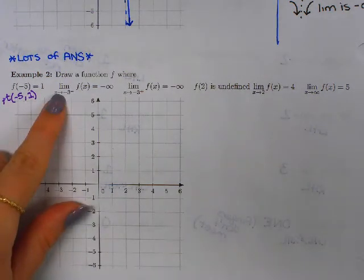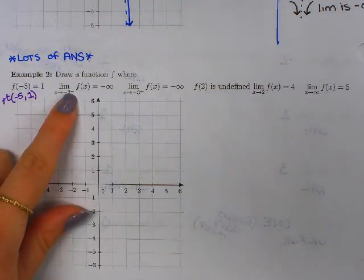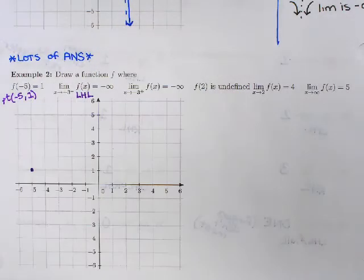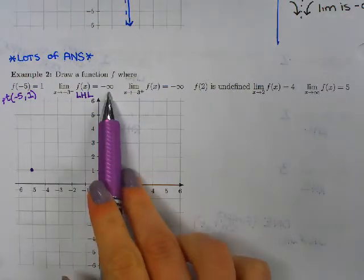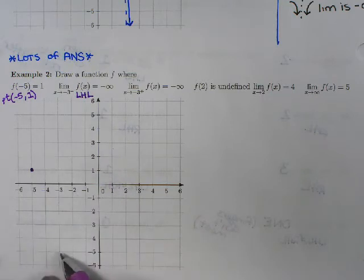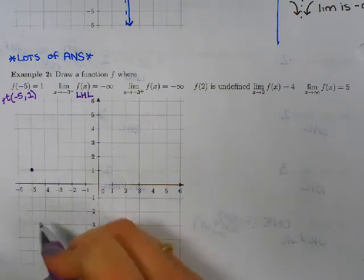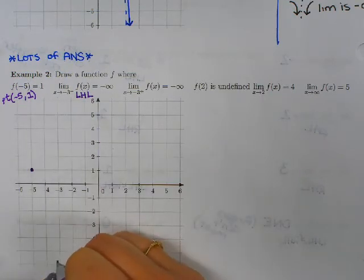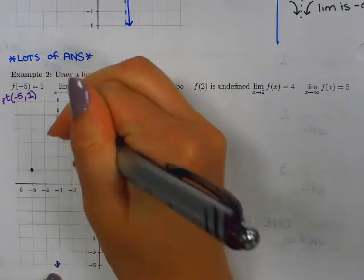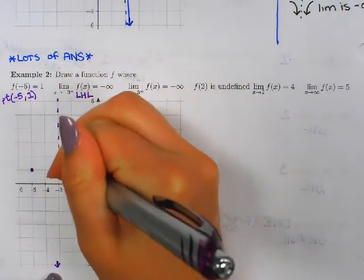My next piece says the limit as x approaches negative 3 from the negative side. So I have a left-hand limit. It has to equal negative infinity. So I'm going to approach negative 3 from the left side, and my y value is going down to negative infinity. Remember, the limit is the y value.